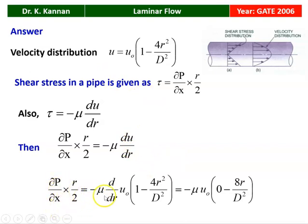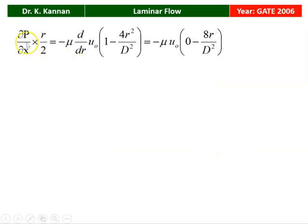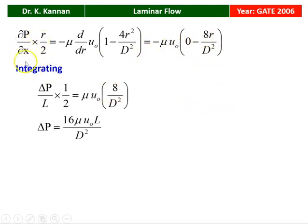So ∂P/∂x · r/2 = −μ · d/dr[U₀(1 − 4r²/D²)]. Differentiating: the constant term becomes 0, and 4r²/D² becomes 8r/D². The r cancels from both sides. Integrating, with ∂x integrating to give ΔP/L and ΔP/L · 1/2 = μ·U₀·8/D². Therefore ΔP = 16μU₀L/D², which is the answer to the problem.